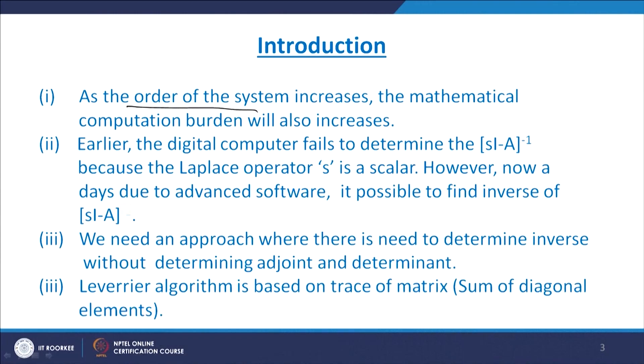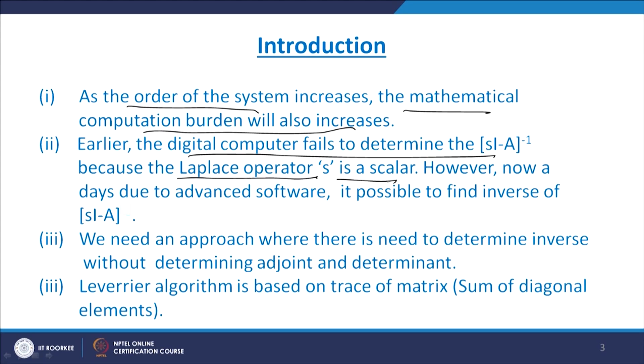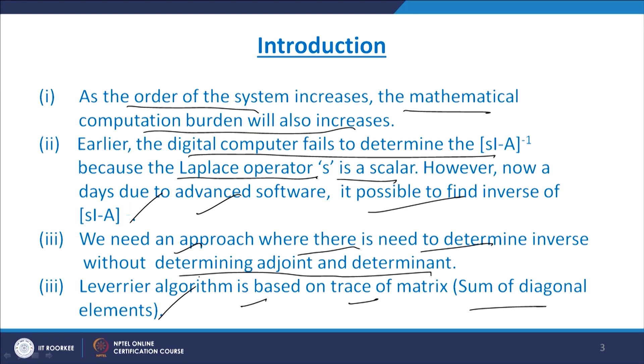There are some advantages to this approach. As the order of the system increases, the mathematical computation burden also increases. Earlier, digital computers failed to determine (SI - A) inverse because the Laplace operator S is a scalar. However, nowadays due to advanced software it is possible. We need an approach where there is no need to determine the adjoint and determinant. The Leverier algorithm is based on the trace of the matrix — simply the sum of diagonal elements — and that is the beauty of this algorithm.